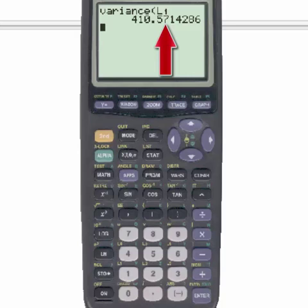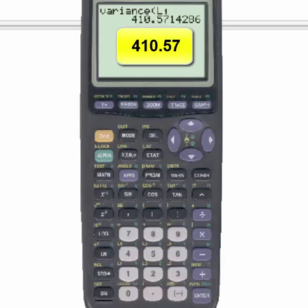The hundredth place is going to be the second decimal place. And to round to the second decimal place, we're going to go to the third decimal place. Since that number is a 1, which is less than 5, our answer will be 410.57.